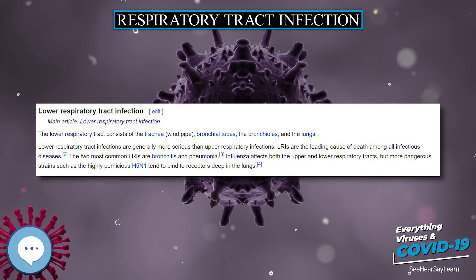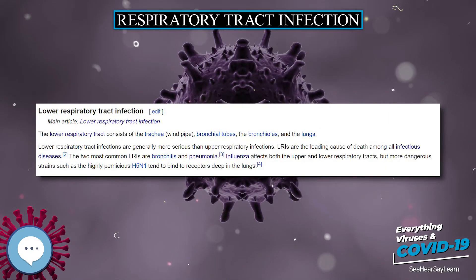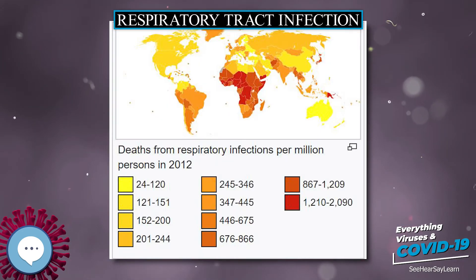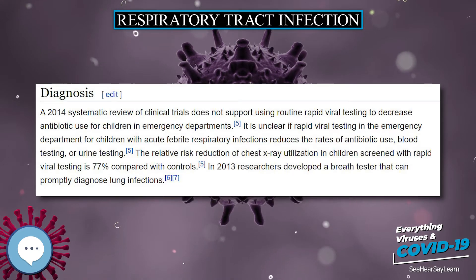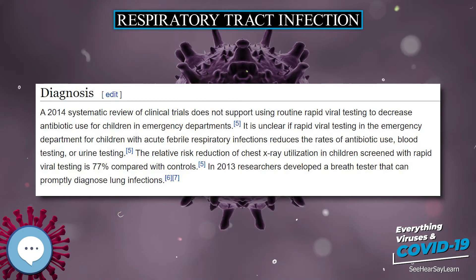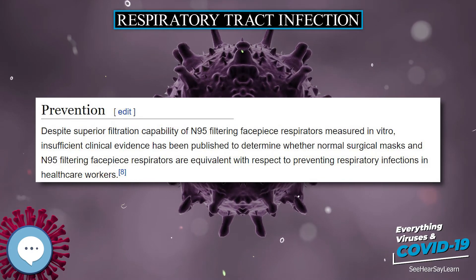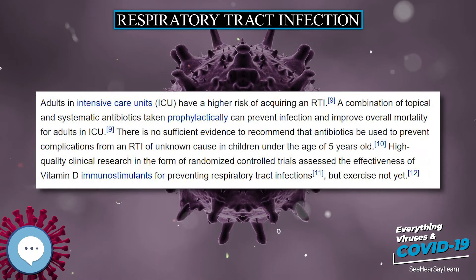Types: Upper Respiratory Tract Infection. Although some disagreement exists on the exact boundary between the upper and lower respiratory tracts, the upper respiratory tract is generally considered to be the airway above the glottis or vocal cords. This includes the nose, sinuses, pharynx, and larynx.